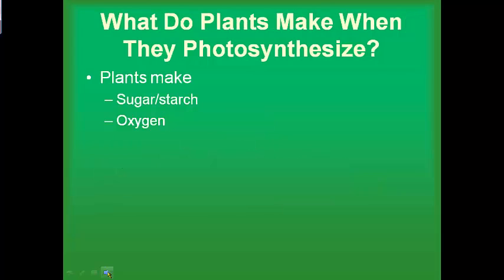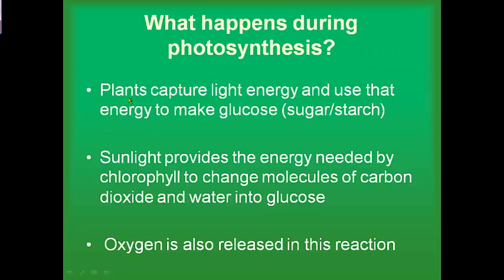So what does a plant make when it's done with photosynthesis? It makes sugars and starches that it stores in the plant for energy for later on, and it releases oxygen. Oxygen is actually a waste product of photosynthesis — kind of think of it as the poop of the plant. The plant captures light from the sun to make glucose; the sunlight provides the energy for the chemical reactions, captured by the chlorophyll in the chloroplasts. Mixing that energy with carbon dioxide and water makes the sugars and releases oxygen.